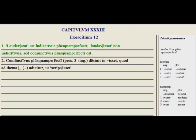Coniunctivus plusquamperfecti personae tertiae singulares desinet in isset, quod ad thema blank addicatur ut scripsisset. So the subjunctive, the pluperfect subjunctive, third person singular, ends in isset, which is added to what stem? This little squiggly line here is the stem of the perfect.